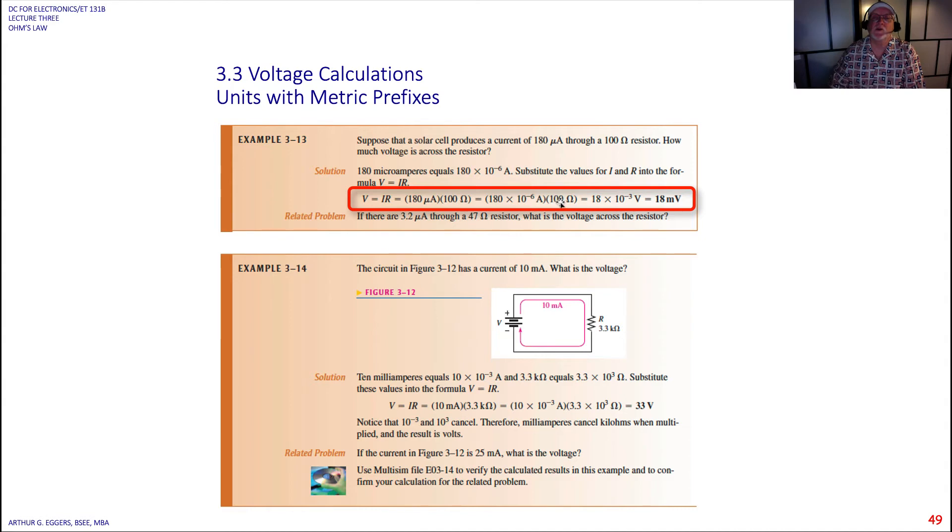100 is equal to 10 squared. And so what I end up with is I could have here 18 times 10 or 1.8 times 10 squared and deal with all of those exponents and simply end up with 18 times 10 to the minus third volts. So I have 18 millivolts. Get used to that in manipulating those metrics and those exponents.